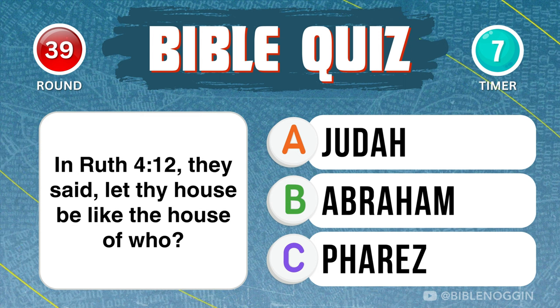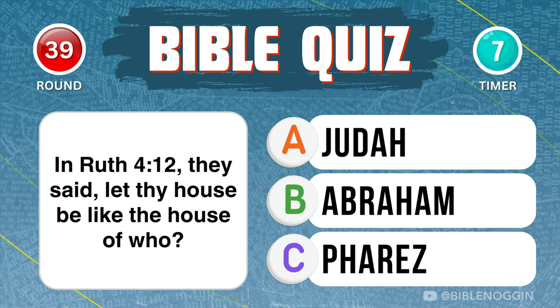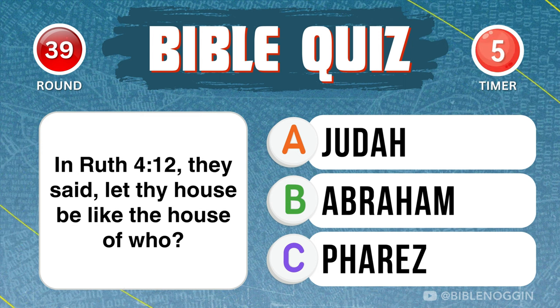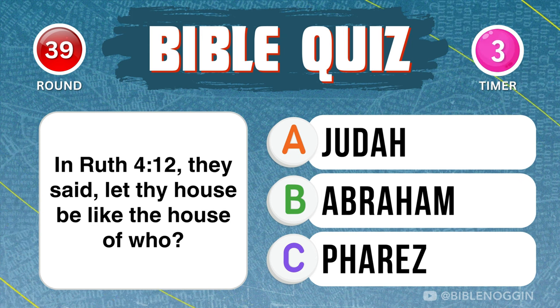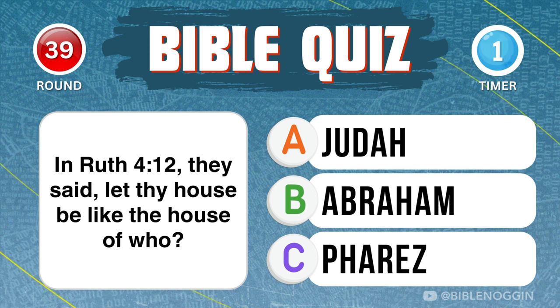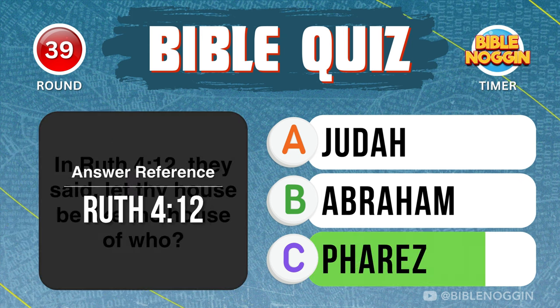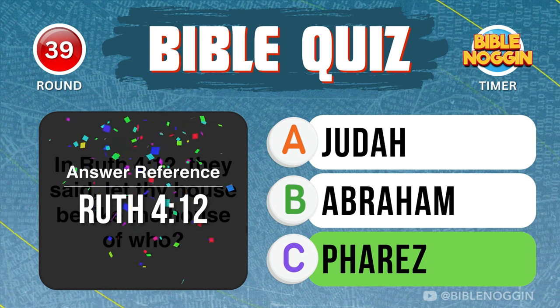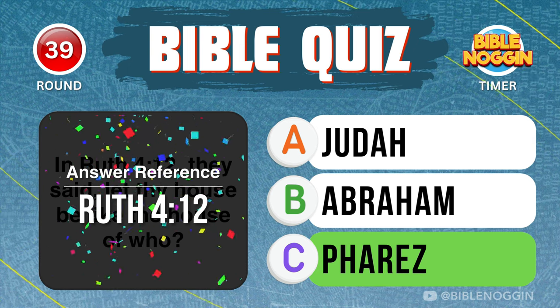Question 39: In Ruth chapter 4, verse 12, they said, 'Let thy house be like the house of' whom? Phares — found in Ruth chapter 4, verse 12.